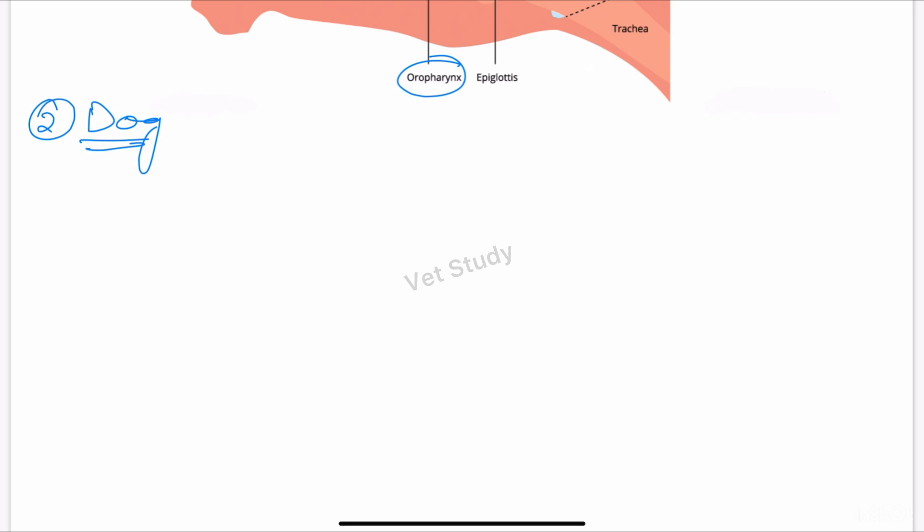Now let's talk about the pig. In pigs, it is comparatively narrow and small, and the cavity of the pharynx reaches up to the second cervical vertebrae. This is important to remember - that the cavity of the pharynx reaches up to the second cervical vertebrae.